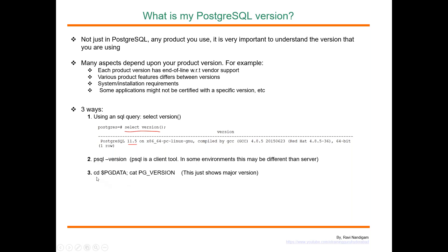The third method is to get into your PGDATA environment directory and run cat pg_version. It will also show the version, but it only shows the major version. For example, if you are running 11.5, it will just show 11.